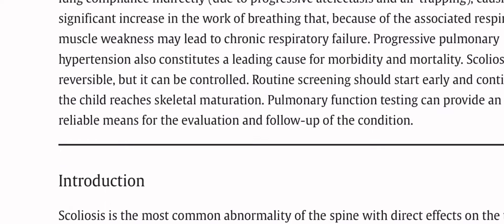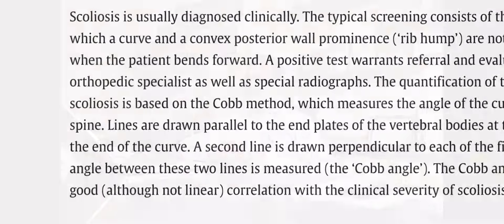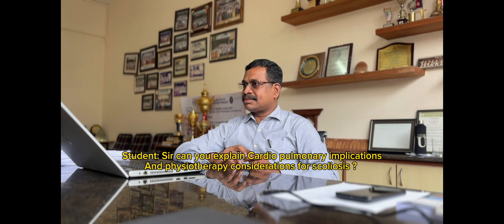Along with orthopedic complications, scoliosis can cause cardiopulmonary complications due to compression of the lungs, resulting in breathing problems. A student asks for clarification on cardiopulmonary implications and physiotherapy considerations. The cardiopulmonary or respiratory implications include reduced lung capacity due to posture, restricted chest wall movements, altered breathing patterns, increased work of breathing, and ventilation-perfusion mismatch.